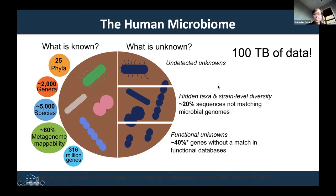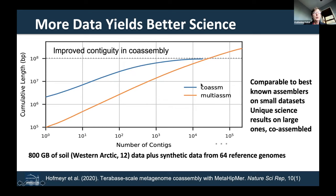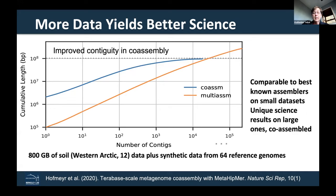Just as in deep learning, we've been able to get much better results by combining lots of computing power with very large datasets. That idea of combining big data with big computing to get better information also happens in this genomics area. This graph looks at the cumulative length of the output — how large is the assembly — and the dashed line shows the reference genome, representing a dataset with a known answer to check how well our tools find that answer.